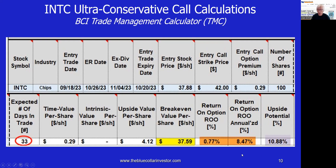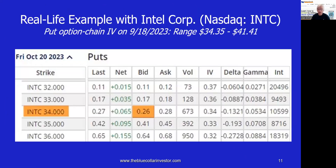If the option is expiring in the money at expiration — the price is above $42 — we could always roll that option, something we need to plan for because it will happen 16% of the time.